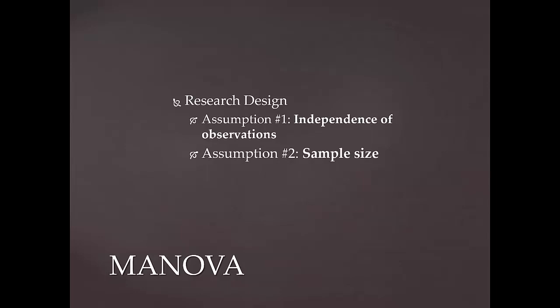Assumption two has to do with sample size. Again, this is another important issue when designing the research. You need to have an adequate sample size based on research and statistical recommendations. Most research texts suggest sample sizes for the chosen research design. For example, Gall and Borg recommends a minimum of 15 to 30 for causal comparative and experimental designs. However, it is also important to consider formulas, such as Cohen's, that take into consideration statistical power.